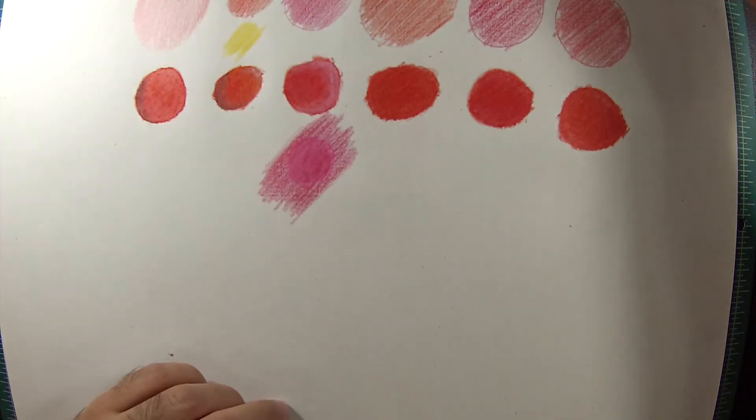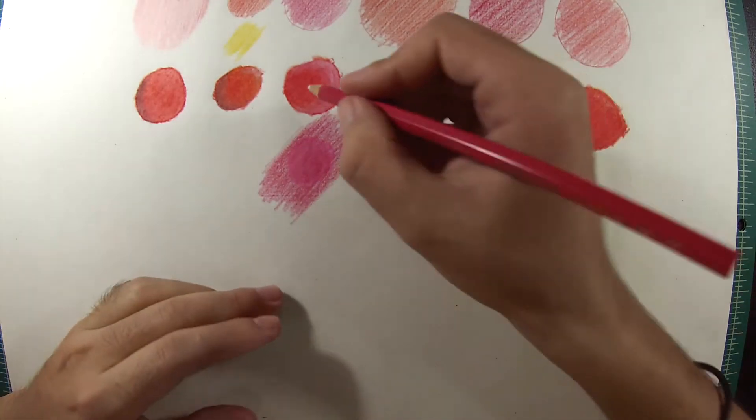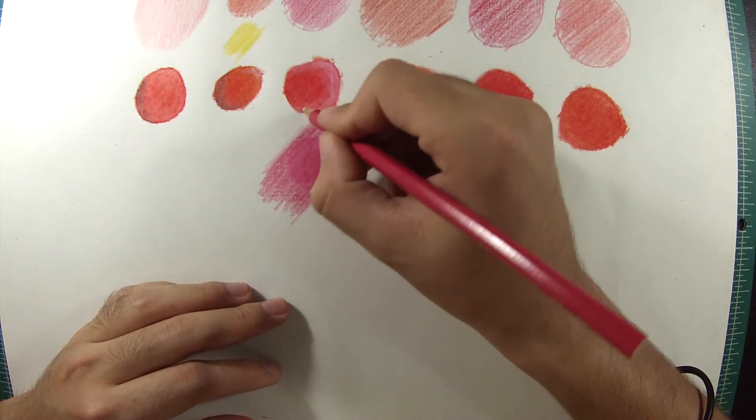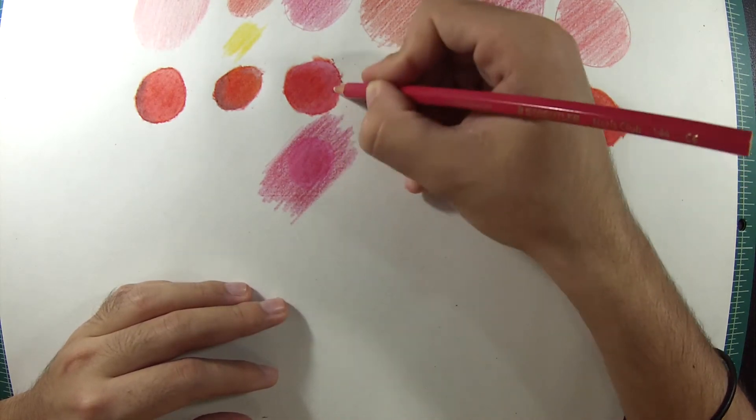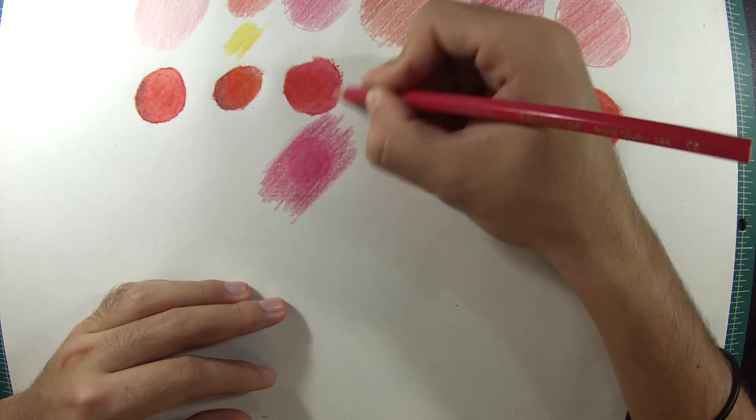Another thing that I wanna show you guys is that if you don't like the highlight, just use the same color that you used to make the circle to fill it in, and then color it with your colored pencil.